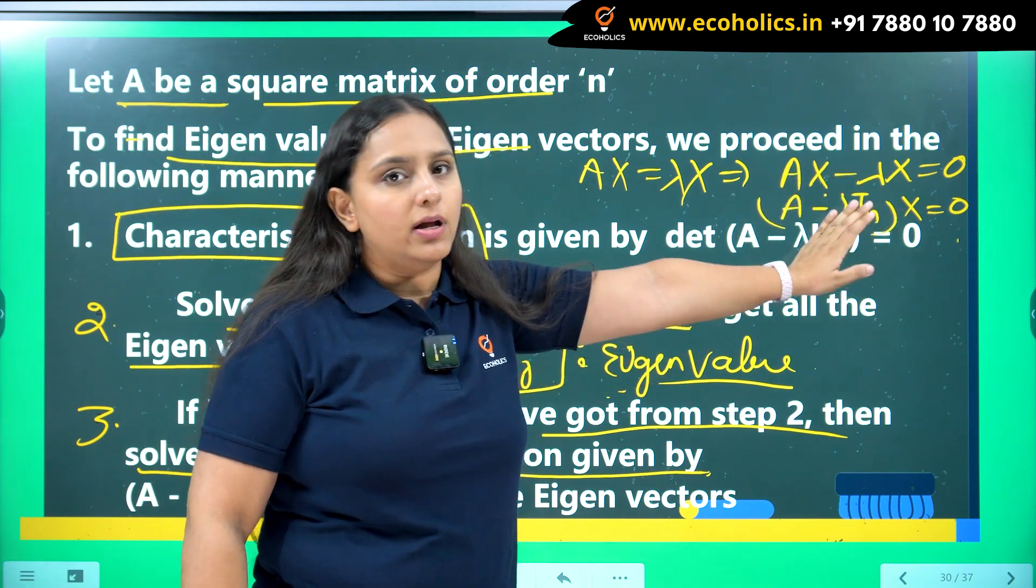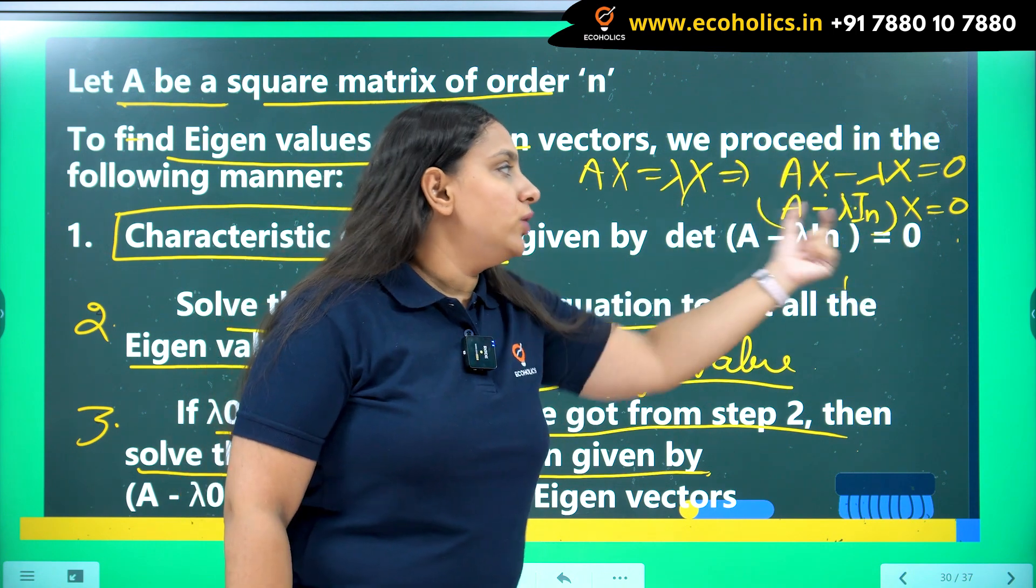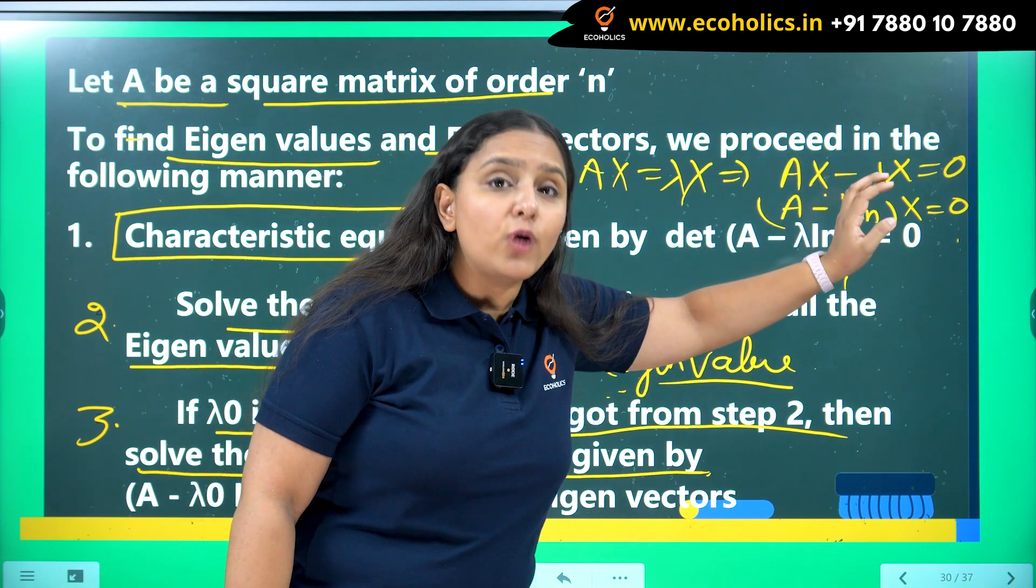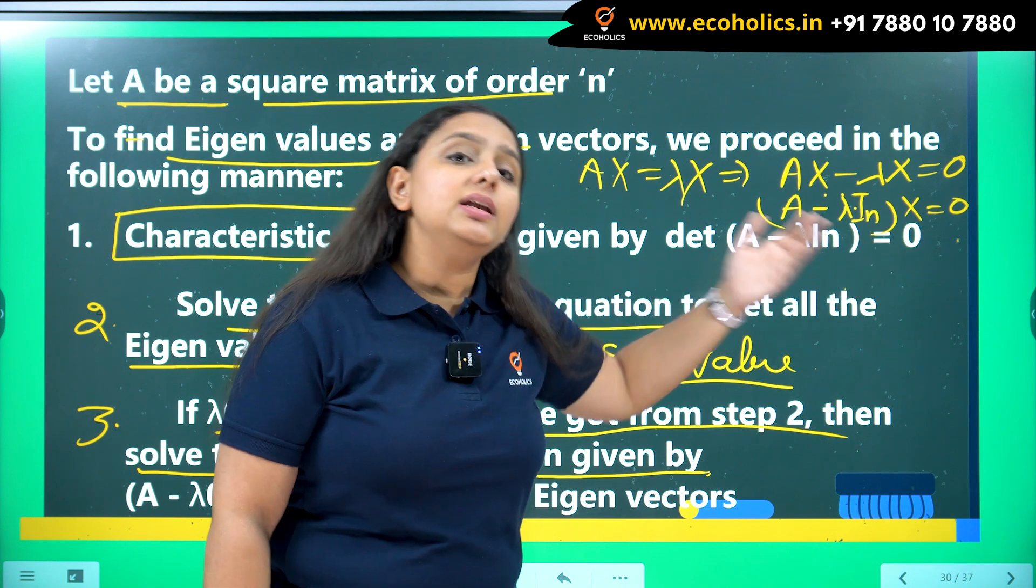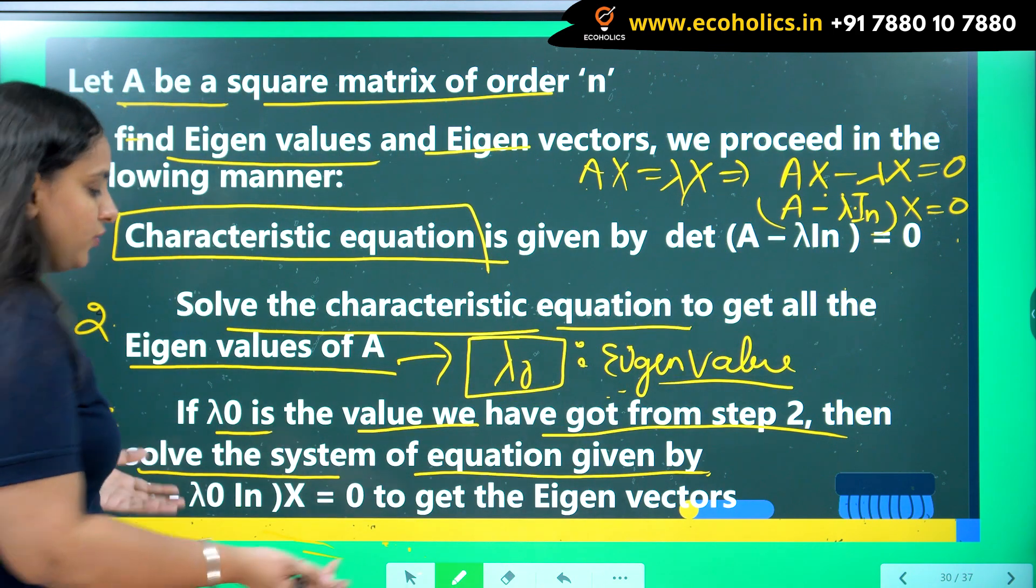I know what are the values of lambda now because I have solved the characteristic equations. Then I know A, I know lambda. What I don't know is x. So I can easily get the value of x from here. This is the only thing which you have to do.